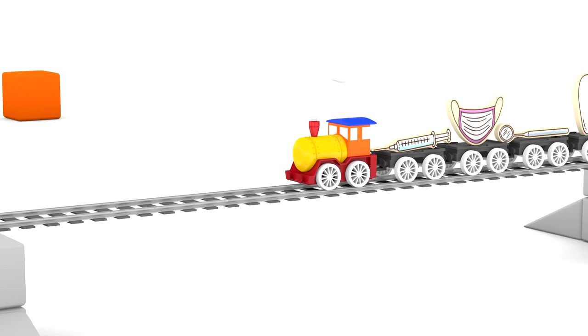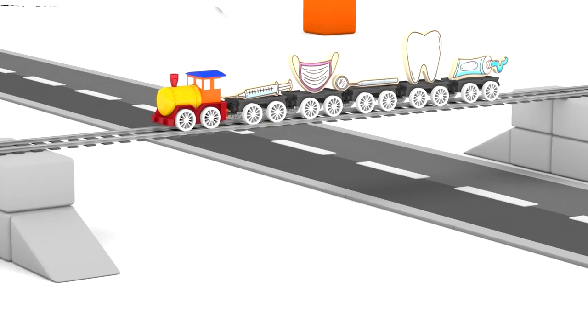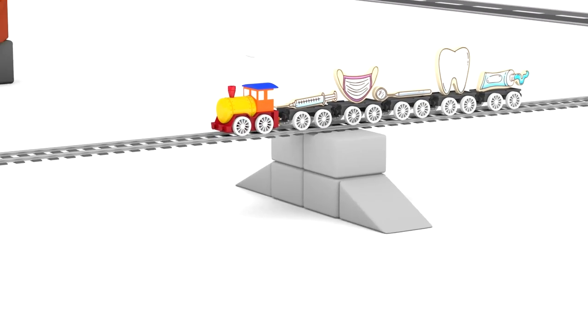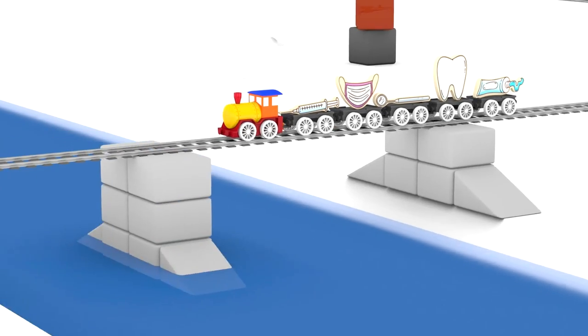Look at that train. Can you see it passing over the road, travelling along the railway line? And then it crosses over a river.